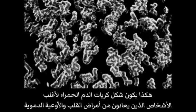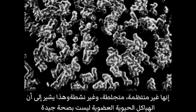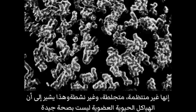This is what red blood cells look like for the majority of people with cardiovascular disease. They are unordered, clotted, and inactive, indicating unhealthy biostructures in an organism.